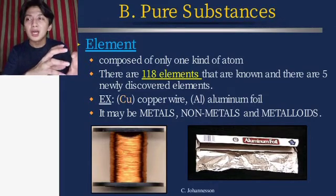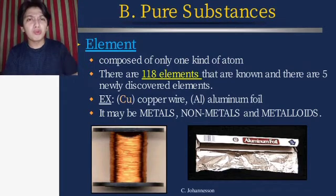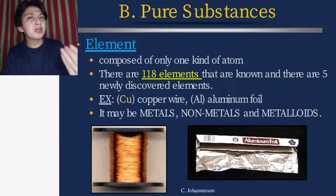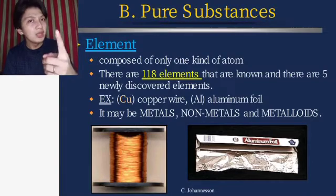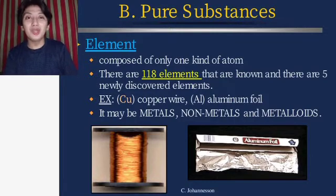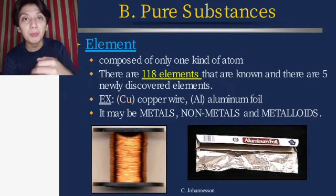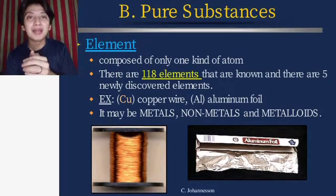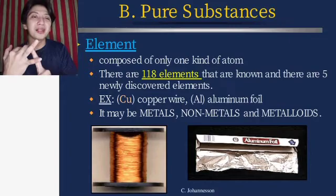There are also blank parts on the lower part of the periodic table because there are elements not yet discovered — maybe one day you can discover one. Examples: Cu is copper, as in a copper wire; Al is aluminum, as in aluminum foil. Elements may be metals, non-metals, or metalloids — those are the three types.